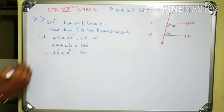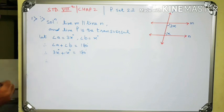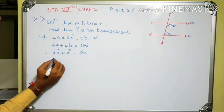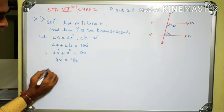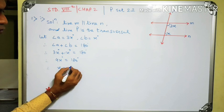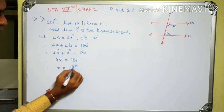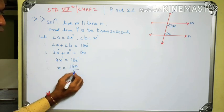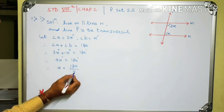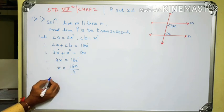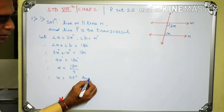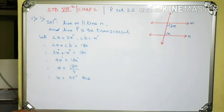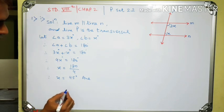3x plus 1x equals 4x degrees, which equals 180 degrees. Therefore, x equals 180 divided by 4, which equals 45 degrees. This is the answer, and this is option C.